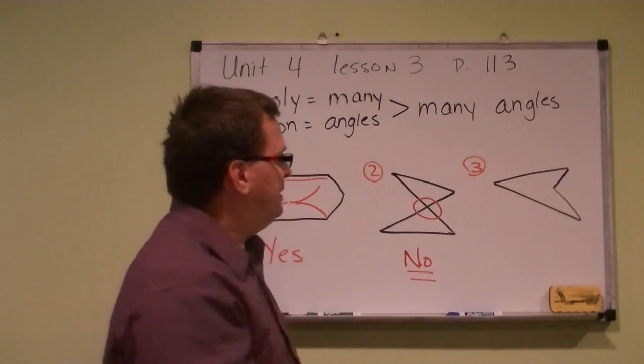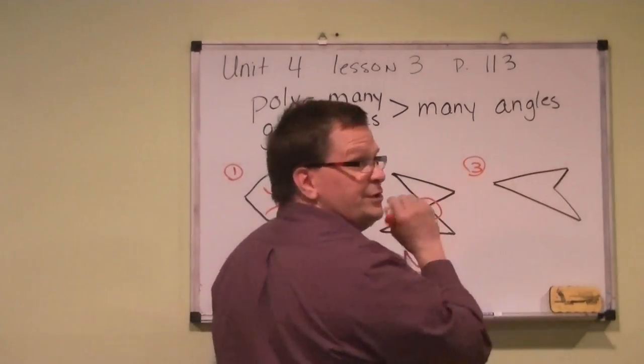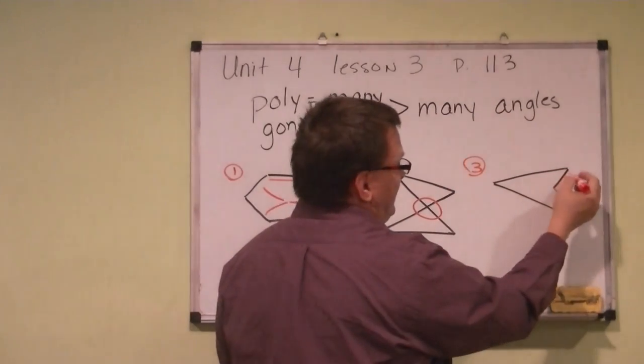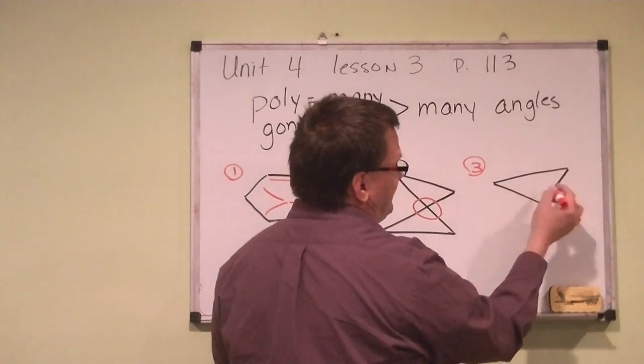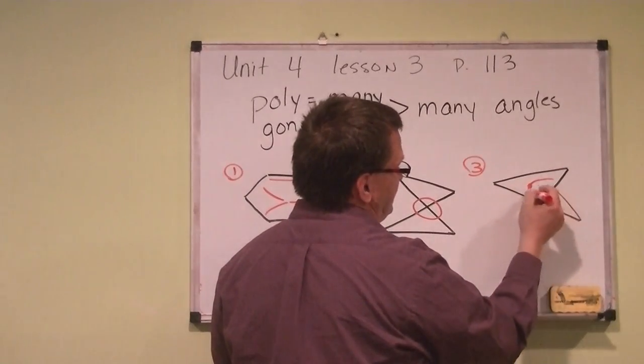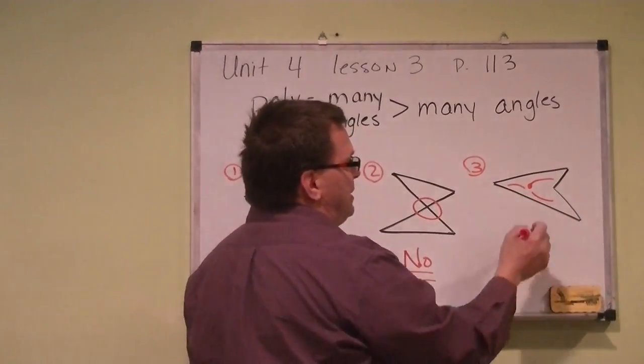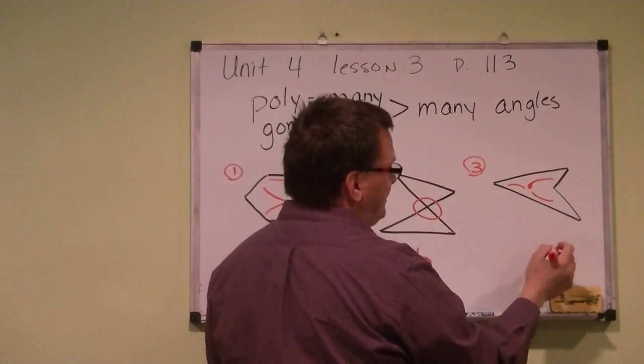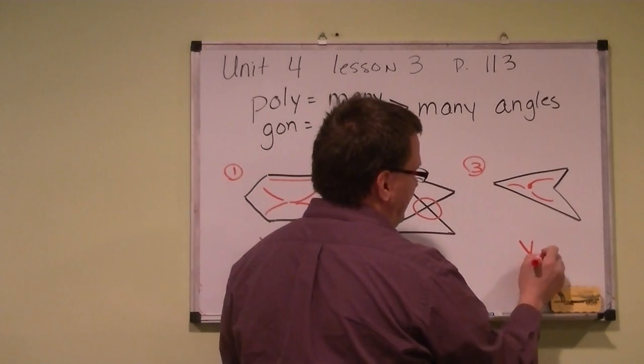And lastly, the one we're going to talk about, and you're going to do the rest in your book. Same thing. Even though it goes inside here, can a person get out? There's no way to get out. There is nothing crossing each other. So that is a yes, that is a polygon.